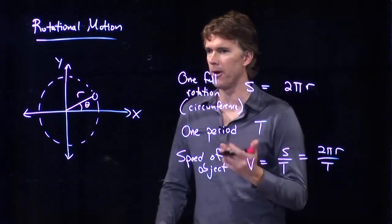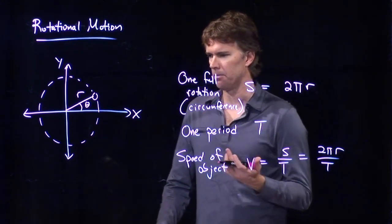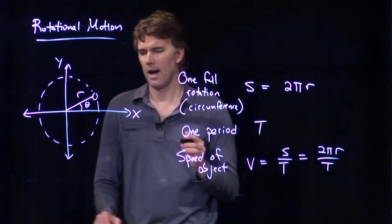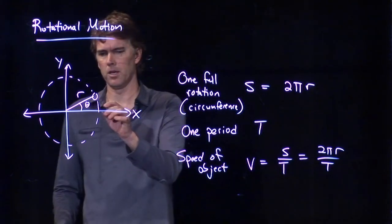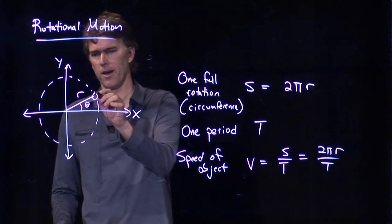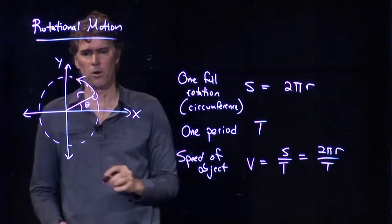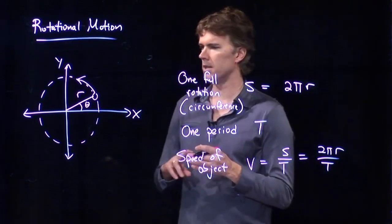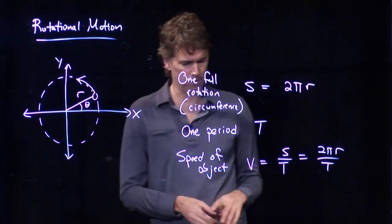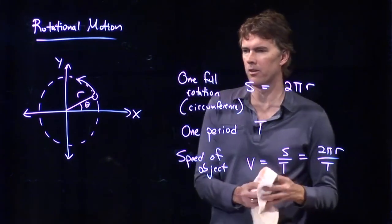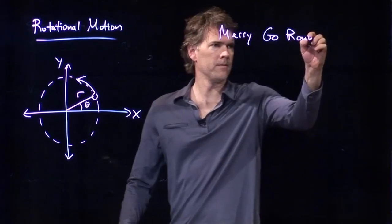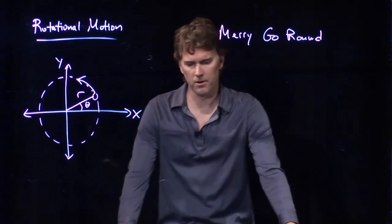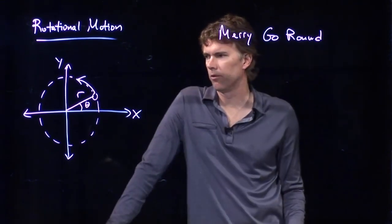Okay. Let's talk about the merry-go-round problem, and see if we can make some sense of this. So our object is now going to be you sitting on a merry-go-round, and you are going around on this merry-go-round, and we tell you the radius of the merry-go-round, and we tell you the period of the merry-go-round, and we need to figure out what our speed is.